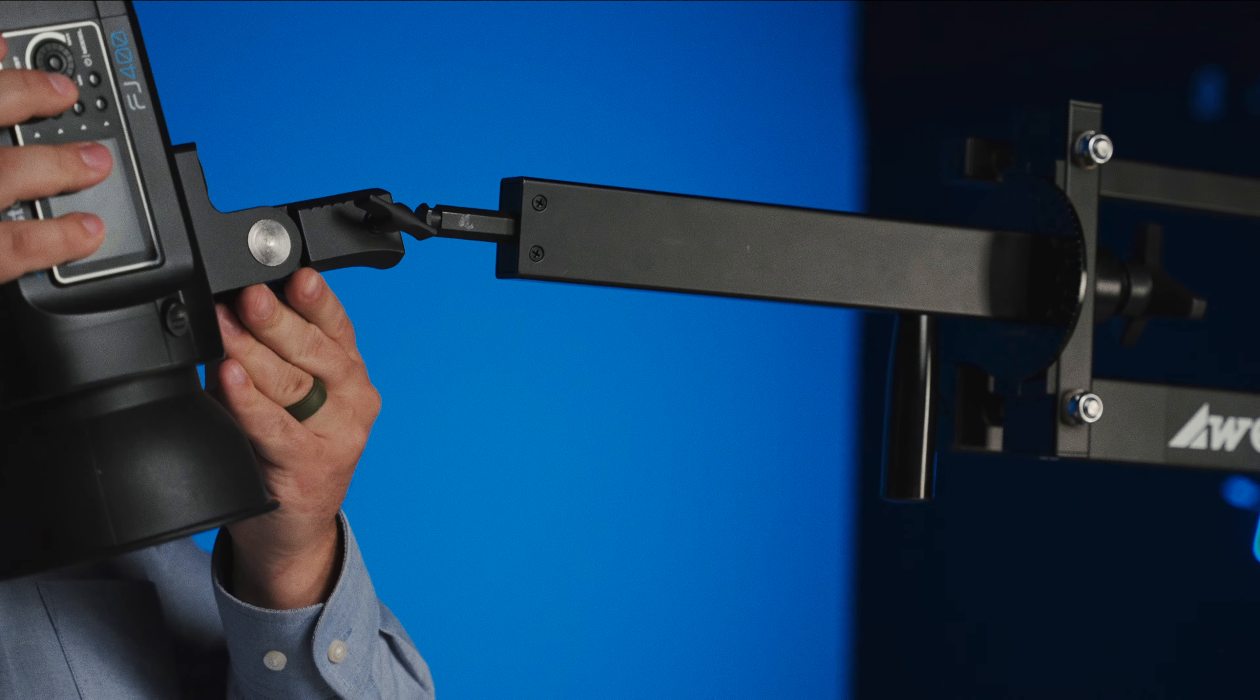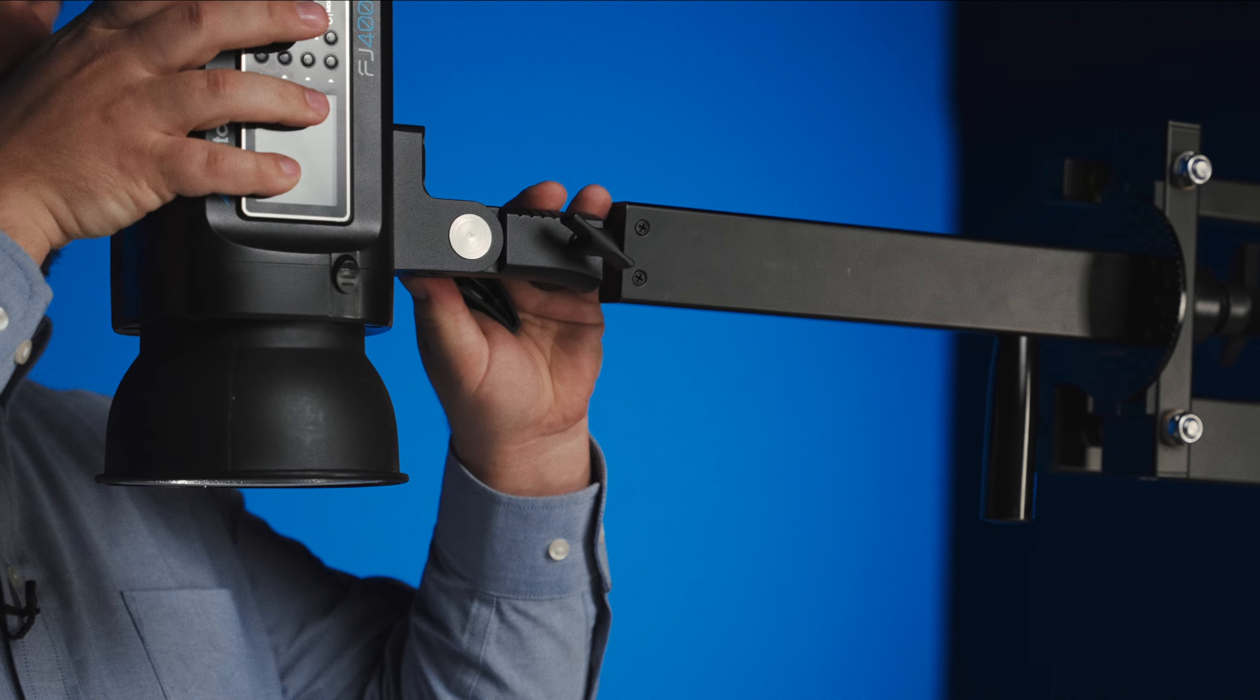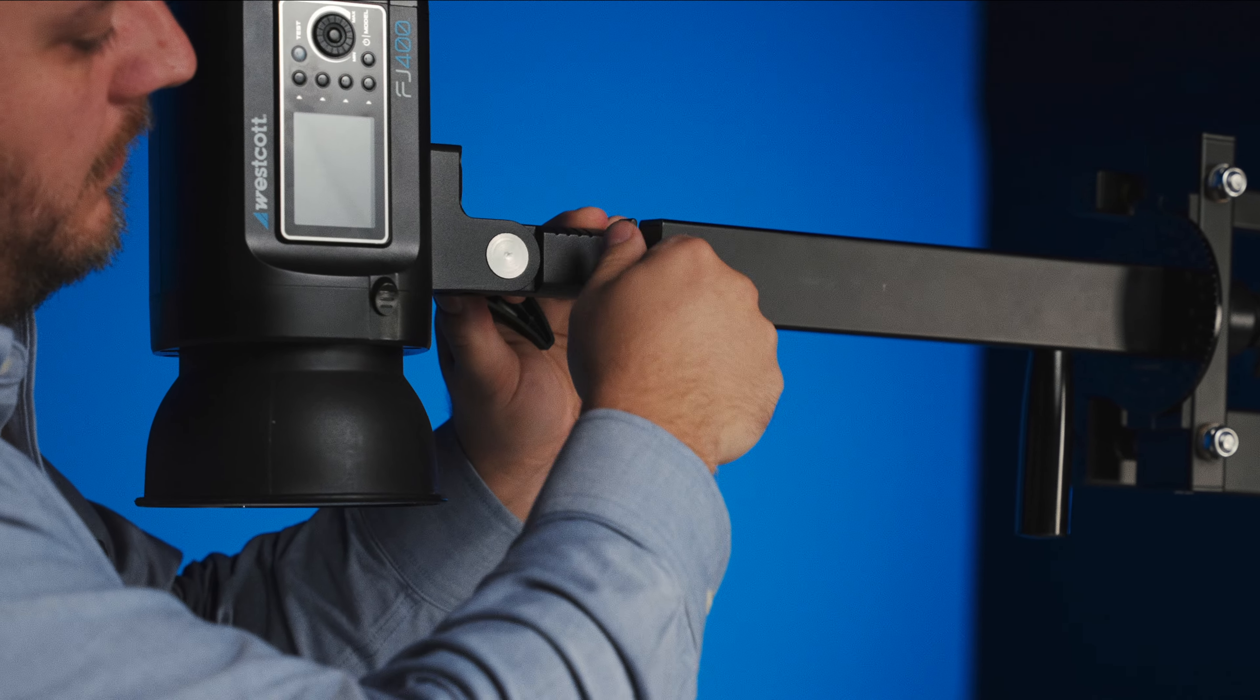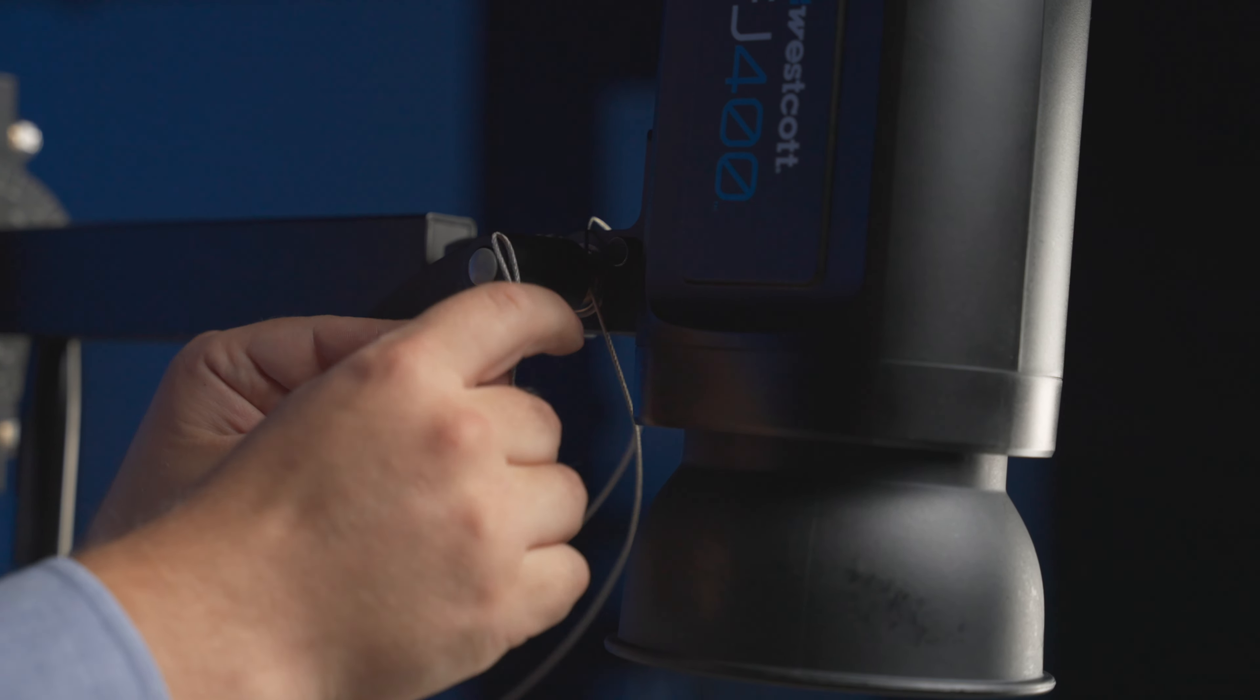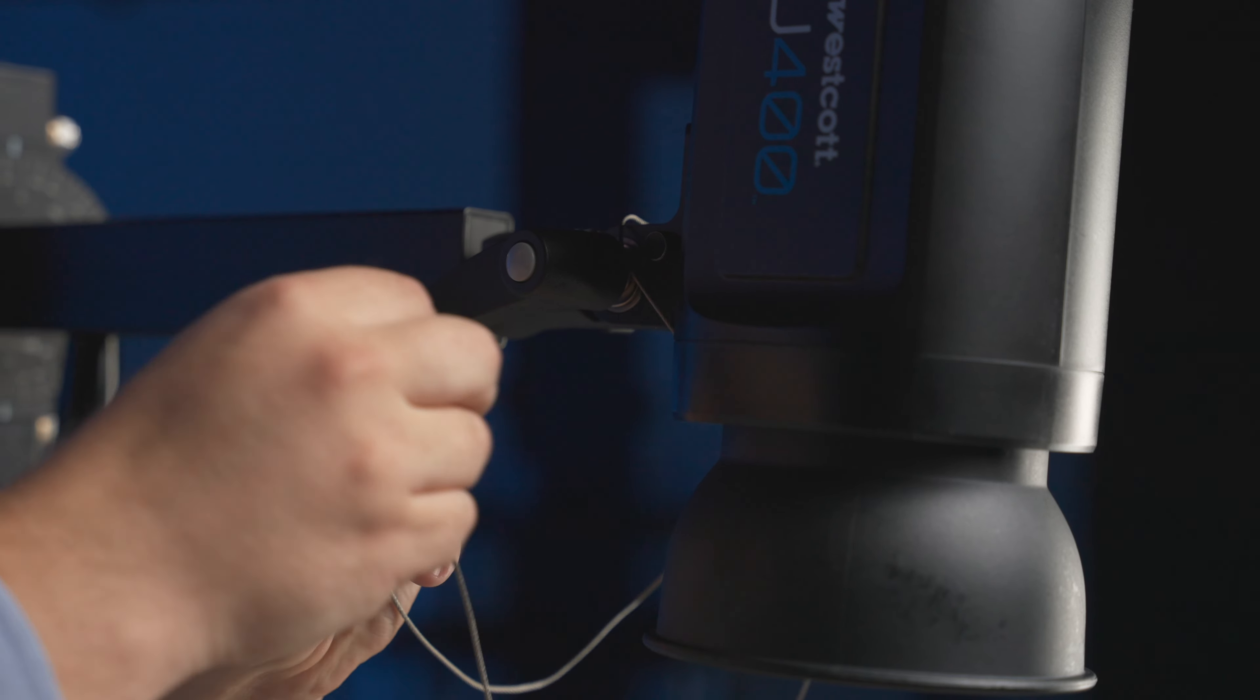Mount your light head to the EZBoom using the 5/8 inch baby pin. Tighten the light's tension knob to secure into place. Wrap the included safety wire around your light's tilter bracket above the handle or another secure area.